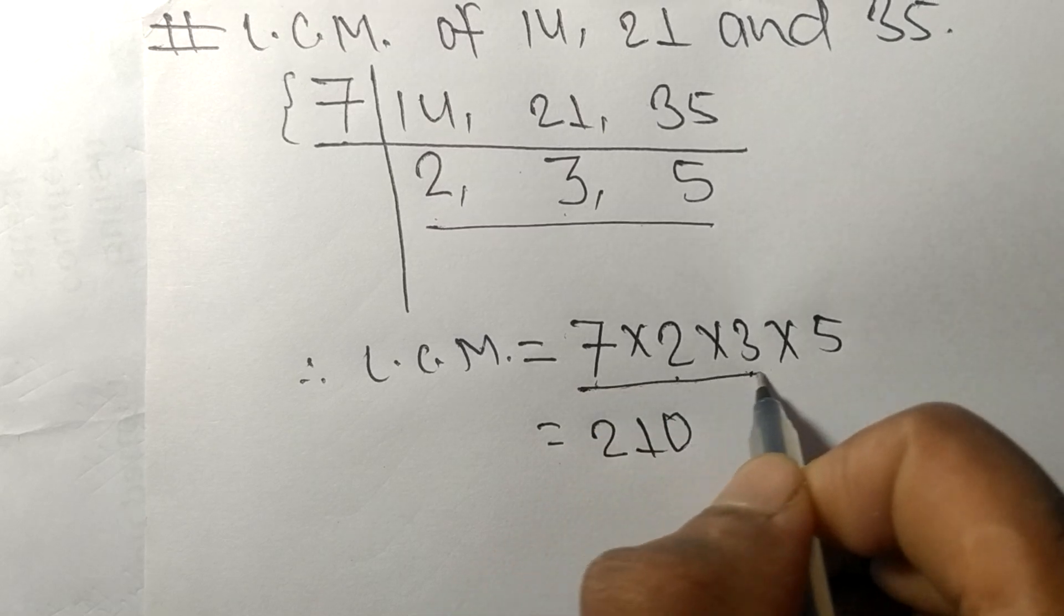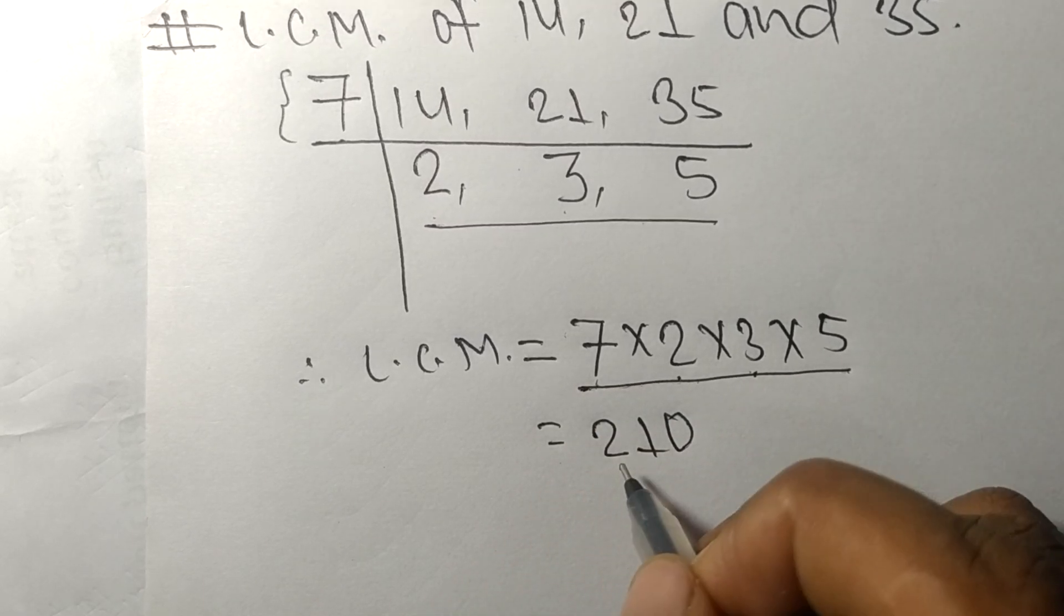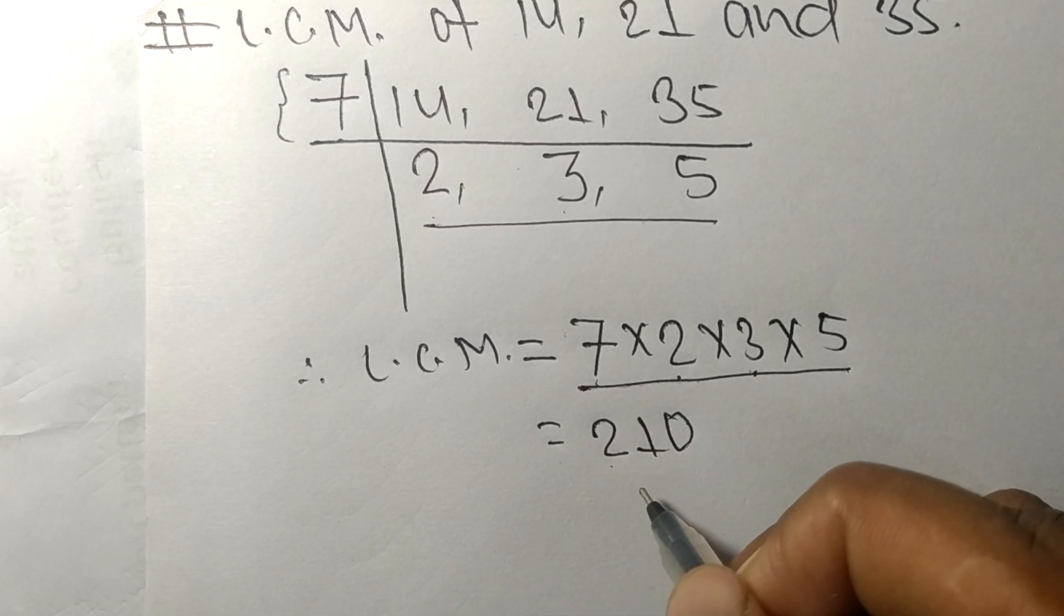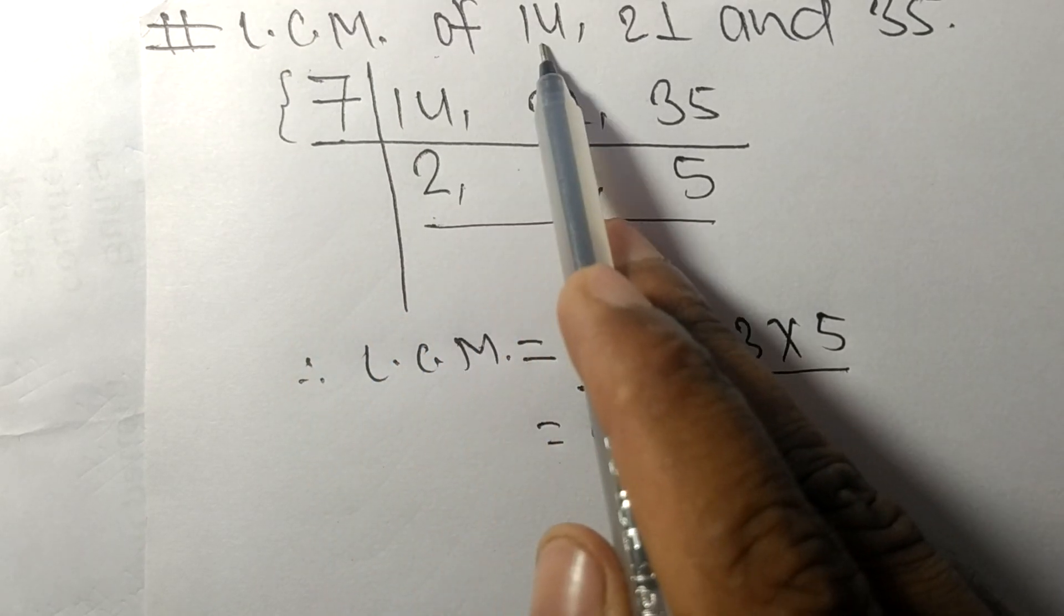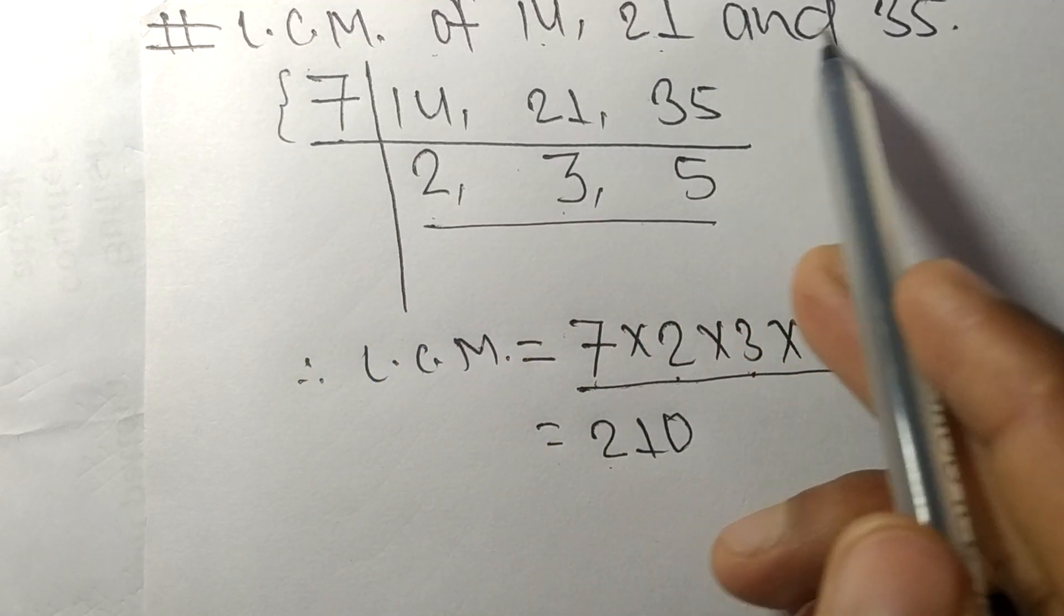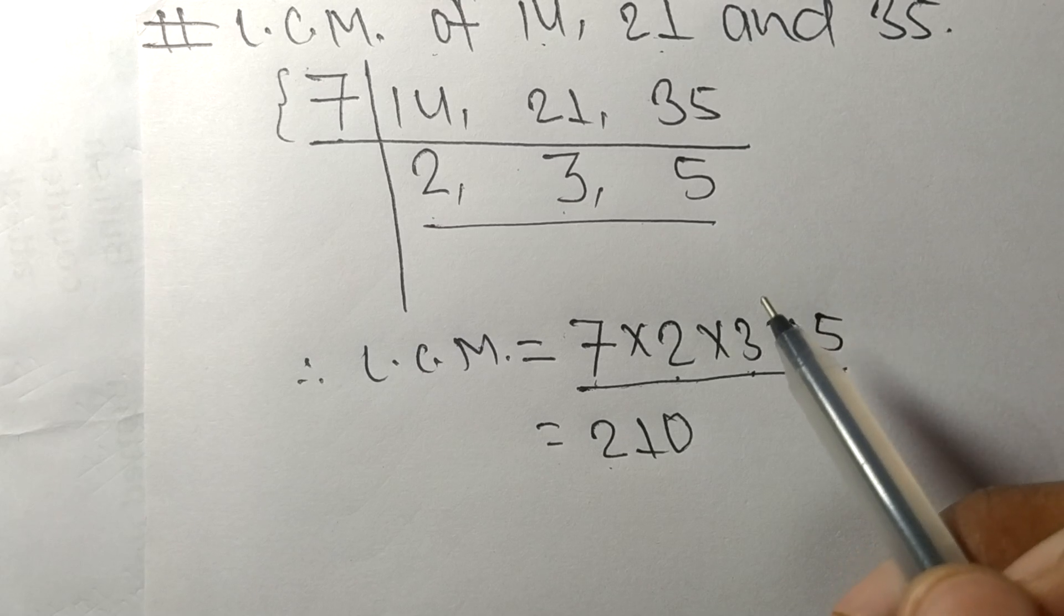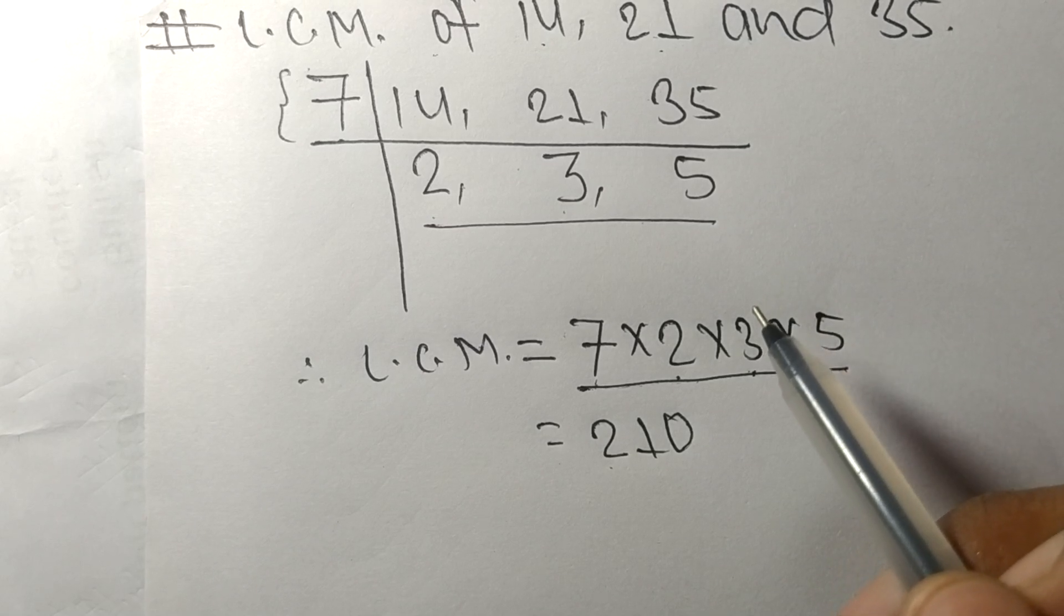So by multiplying all these numbers, we got 210. So 210 is the LCM of 14, 21 and 35. So this much for today and thanks for watching.